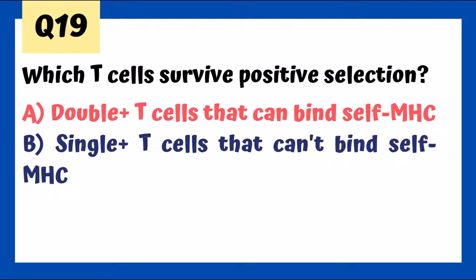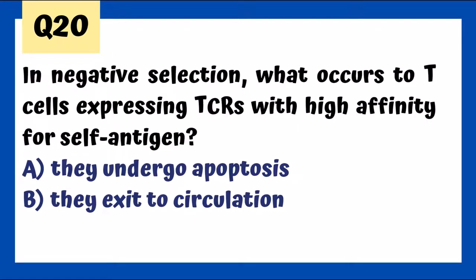In negative selection, T-cells expressing TCRs with high affinity for self-antigen undergo apoptosis. If we're binding too tightly to self-antigen, the T-cells will not survive and they undergo apoptosis. They can also turn into Tregs.